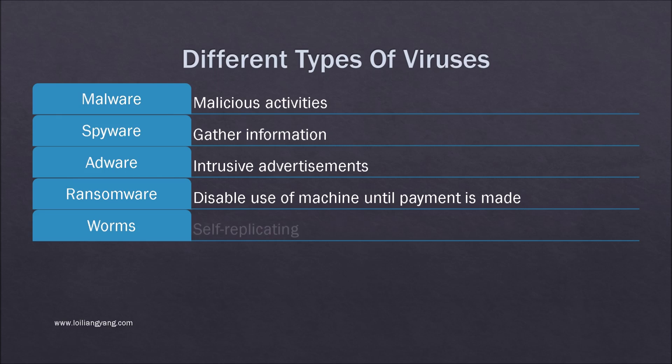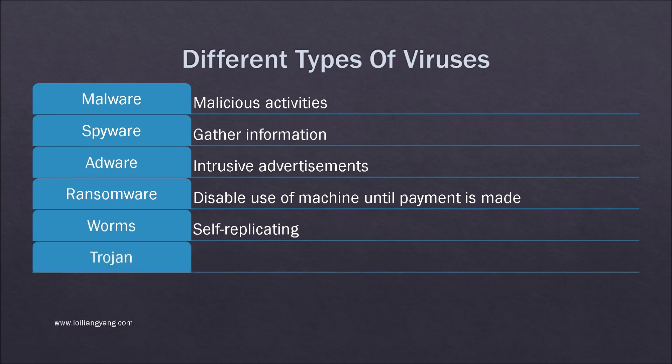Worms are self-replicating viruses which propagate to other computers without the intervention from their creator. They are highly destructive because they literally run on their own.